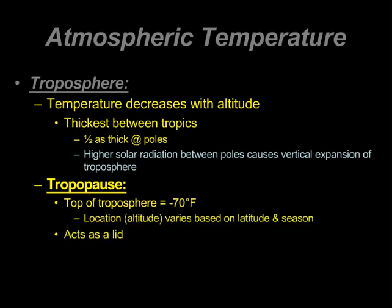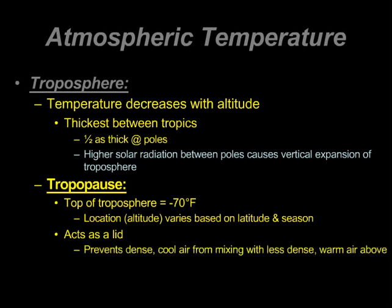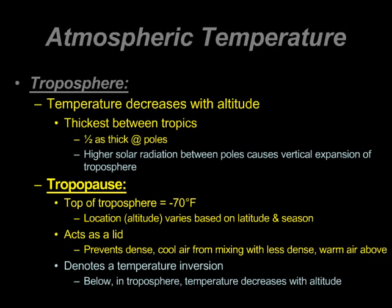This helps explain the different thickness between the poles and the tropics. At the poles it's already very cold, so you reach negative 70 degrees Fahrenheit relatively quickly going up. At the tropics, where it averages about 80 degrees Fahrenheit every day, you have to go much further up to reach negative 70 degrees Fahrenheit. The tropopause acts as a lid, which is why our weather is overwhelmingly contained in the troposphere — it prevents dense, cool air from mixing with the less dense, warm air above. The tropopause denotes a temperature inversion: in the troposphere, temperature decreases with altitude, whereas in the stratosphere, temperature increases with altitude.